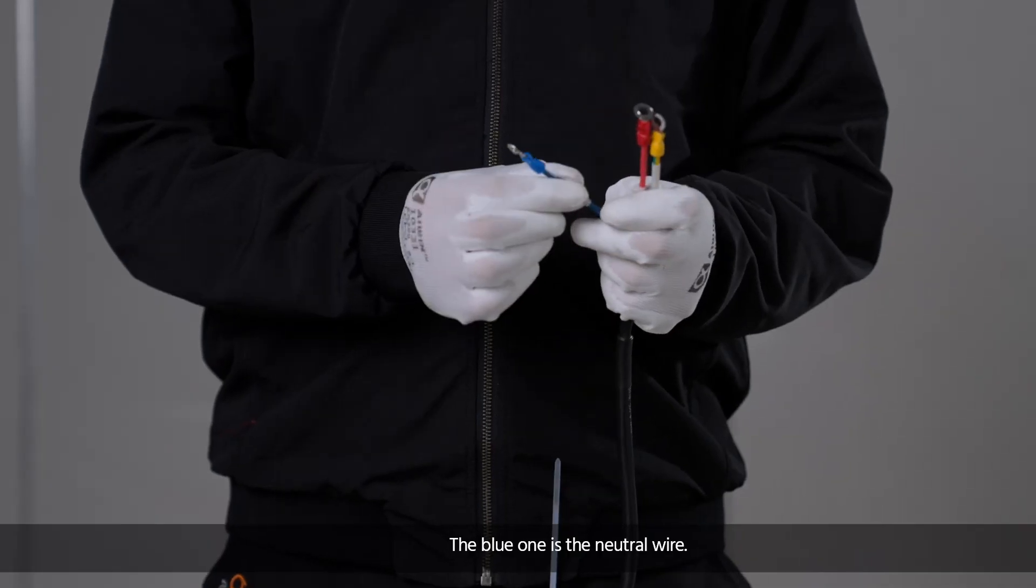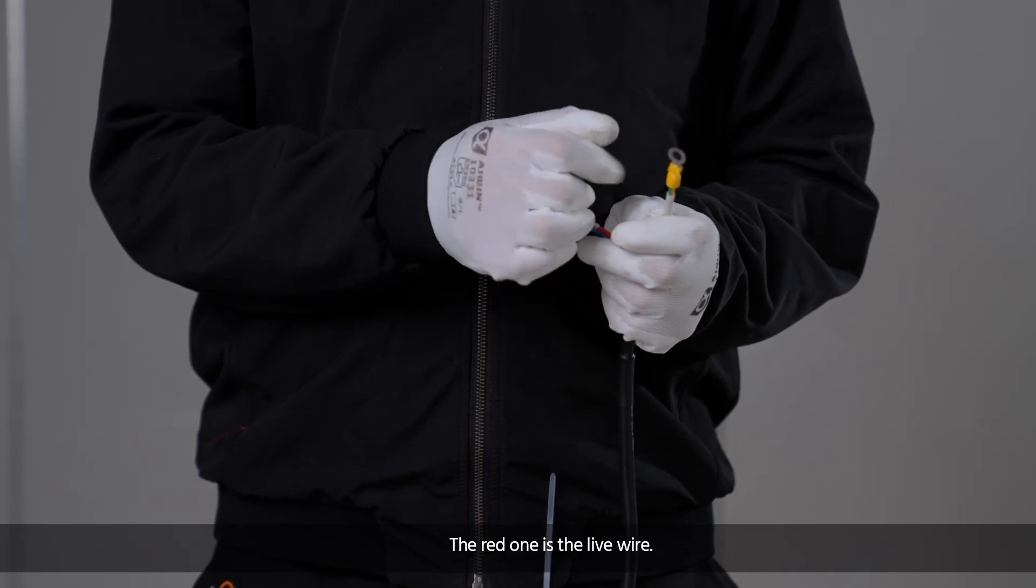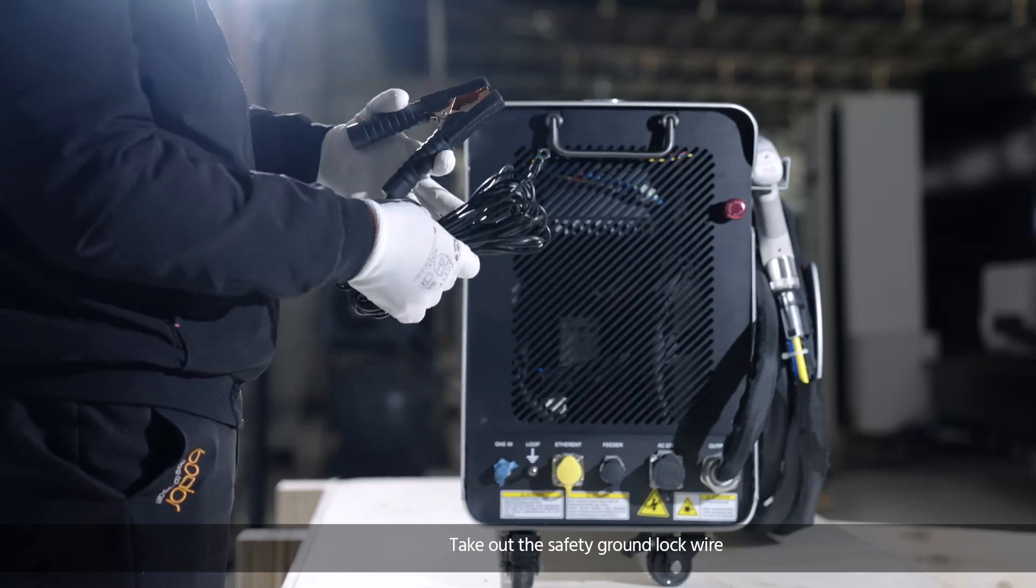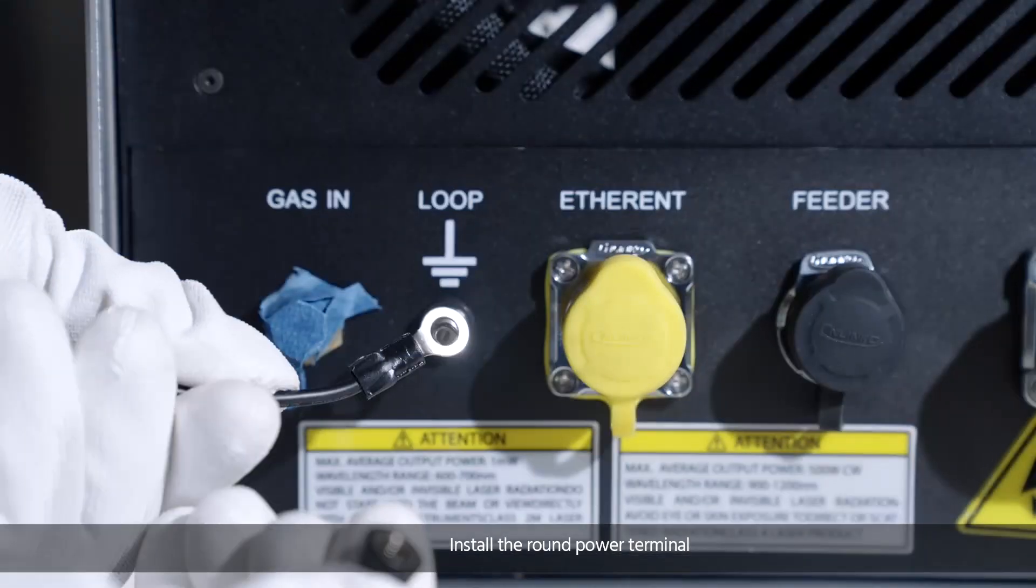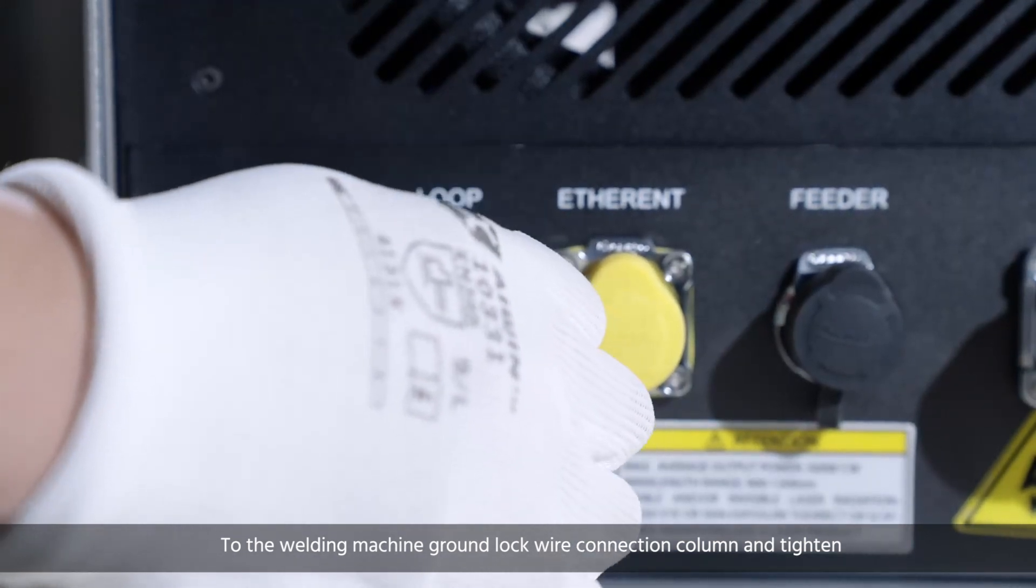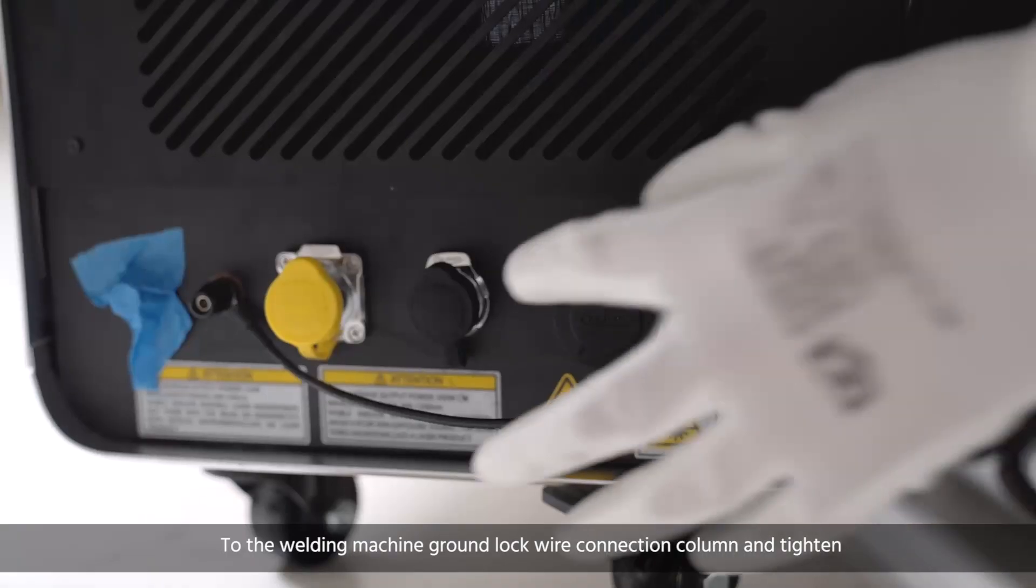The blue one is the neutral wire, the red one is the live wire, and the yellow one is the ground wire. Take out the safety ground lock wire, install the round power terminal to the welding machine ground lock wire connection column, and tighten.